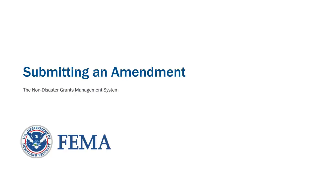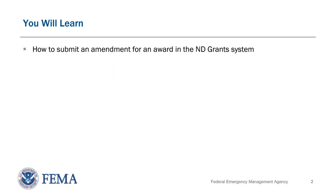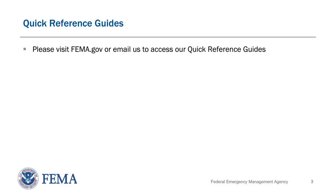Welcome to the ND Grants training video on submitting an amendment for an award. In this video, you will learn the process of how to create and submit an amendment through the non-disaster grant system. A grantee can submit an amendment request to make a change to an award. It is important to note that using the Internet Explorer browser will yield the best results for working in ND Grants. As a reminder, several quick reference guides are available at FEMA.gov that provide step-by-step instructions for completing all tasks in ND Grants.